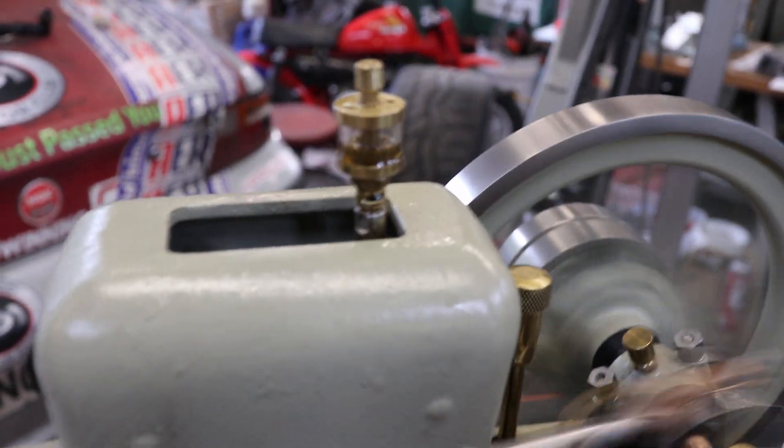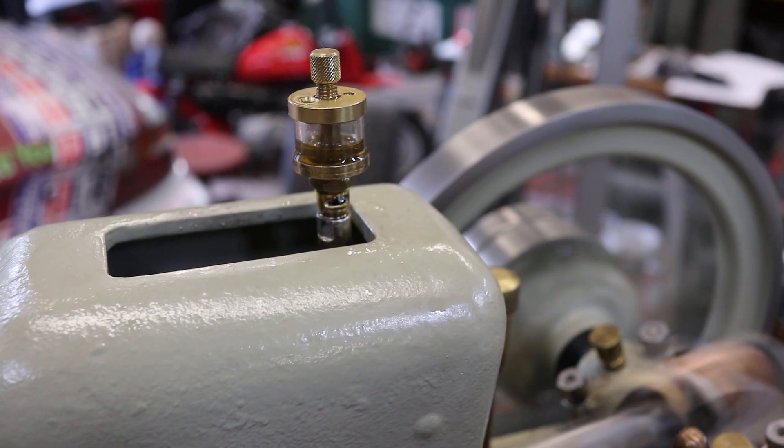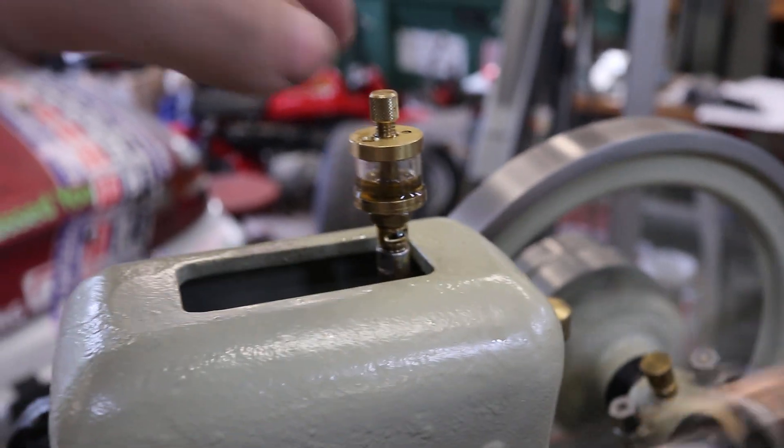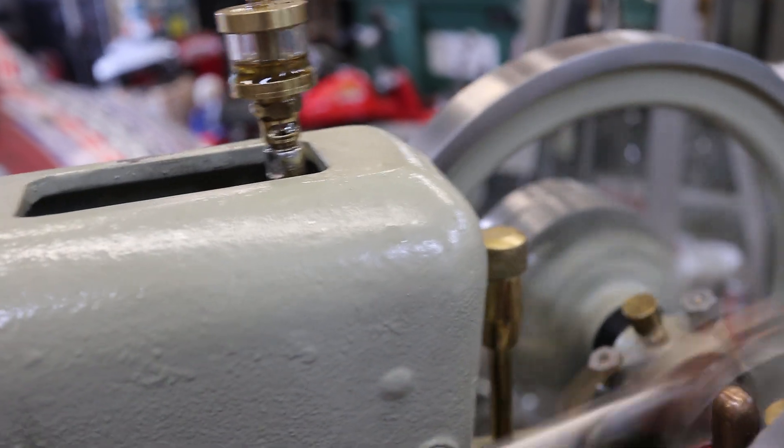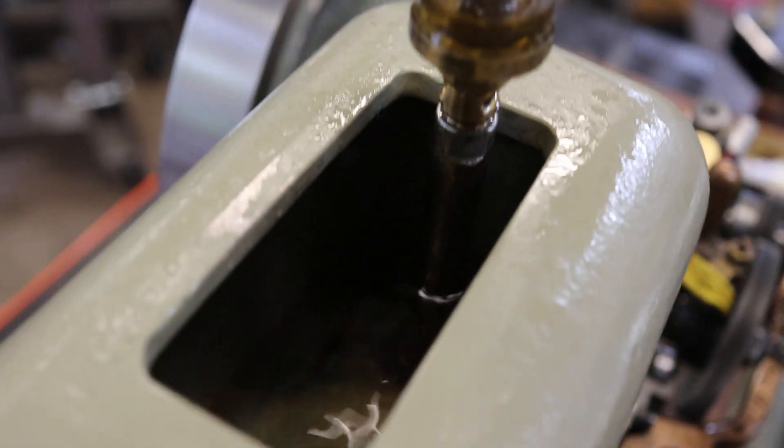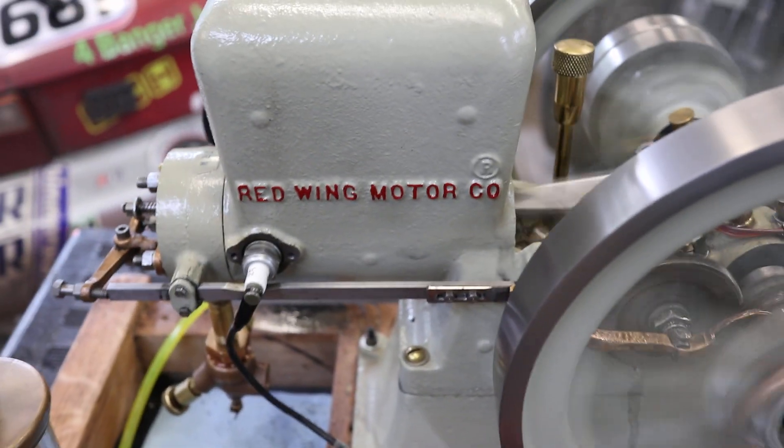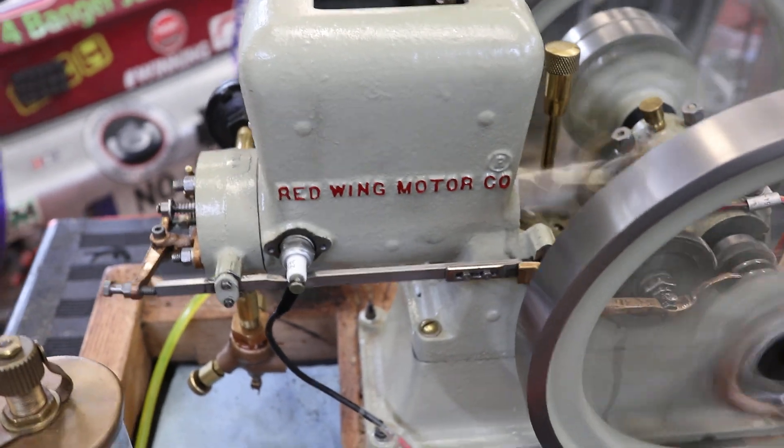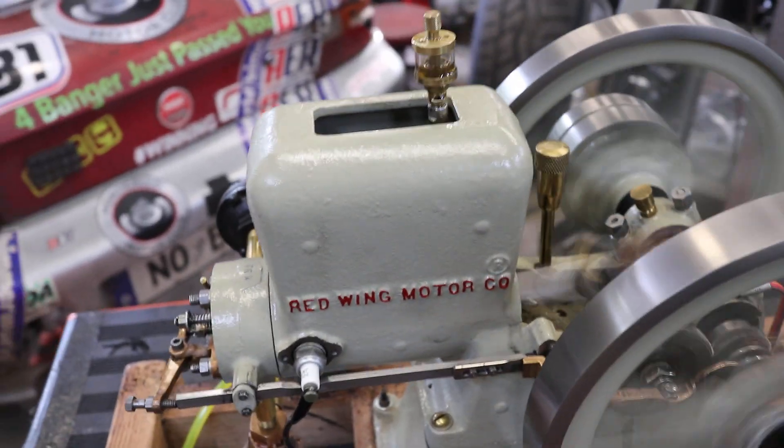And then what we have on top here is an oiler. So this you put regular, I put just some 30 weight motor oil in there. And there's a little needle valve to adjust it. And the oil drips through that little opening so you can see it drip. And it drips right down that tube onto the top of the cylinder to oil your piston. So maybe like a piston squirter. This is a gravity fed piston squirter, so to speak.